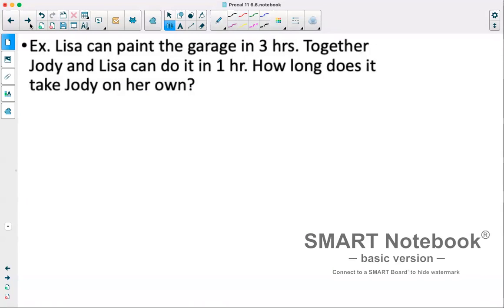A similar example. Lisa can paint the garage in 3 hours. Together, Jodi and Lisa can do it in 1 hour. How long does it take Jodi on her own? We'll set this up the same way as we did before. So we'll have a column for time. We also have Lisa as a label, Jodi, and together. Lisa on her own takes 3 hours. Together, it's 1 hour. And Jodi, we don't know, we'll say that's T.